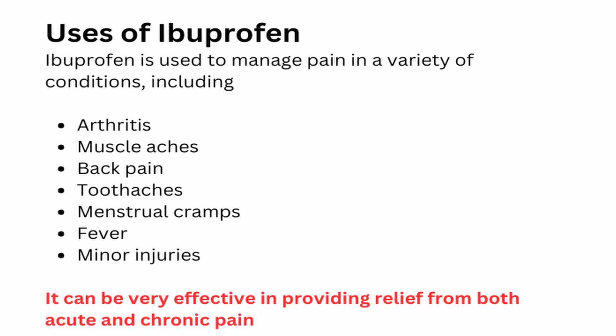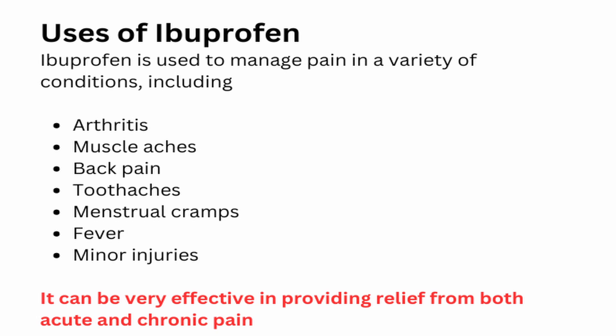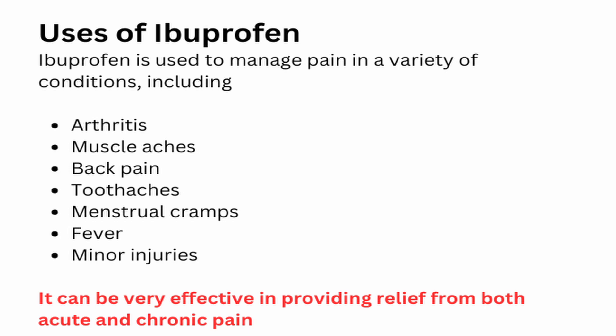Ibuprofen has many uses. It is used to relieve inflammation and pain in arthritis, muscle aches, back aches, toothaches, menstrual cramps, fever and other minor injuries. It can be very effective in providing relief from both acute and chronic pain. Most adults and children over the age of six months can safely use ibuprofen, but it is essential to follow the instructions of your healthcare provider.